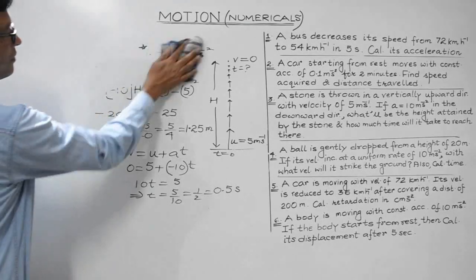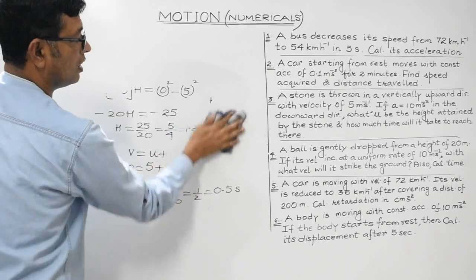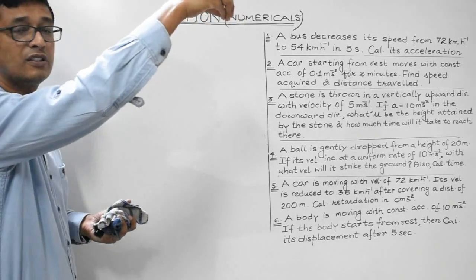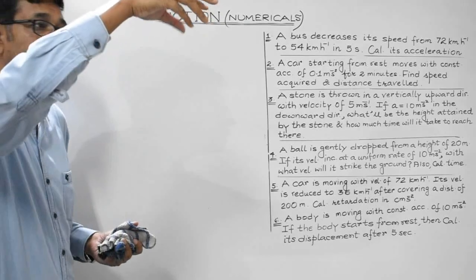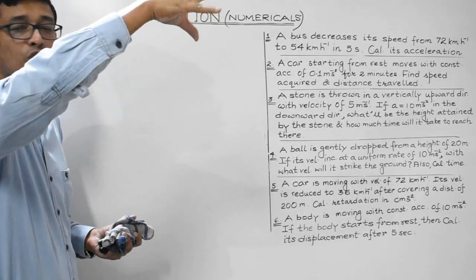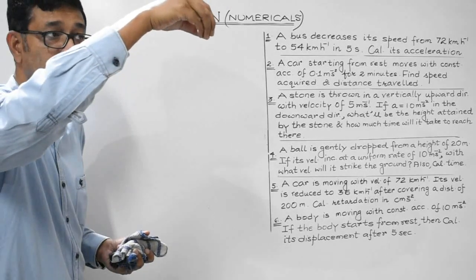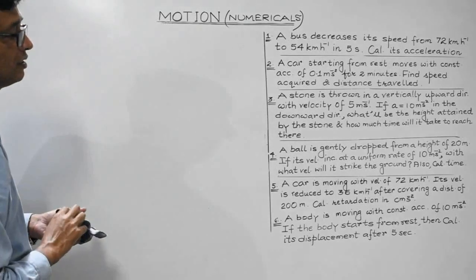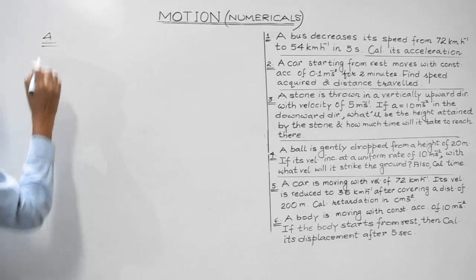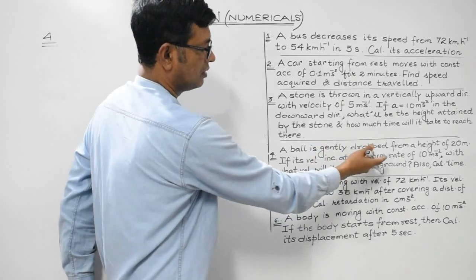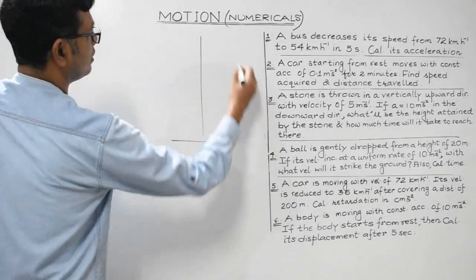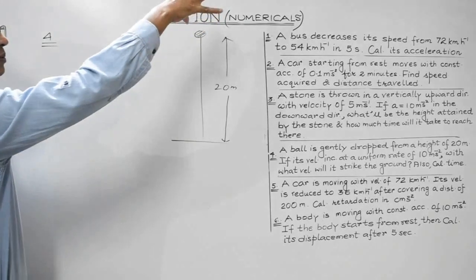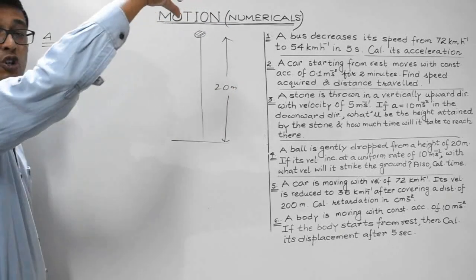The fourth question involves a different scenario — vertical downward motion. A body is gently dropped from a height of 20 meters. When a body is dropped, it is not given any initial velocity — it is simply released. So when a body falls freely, the initial velocity u = 0.